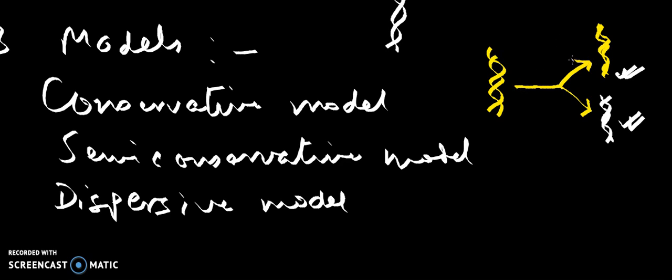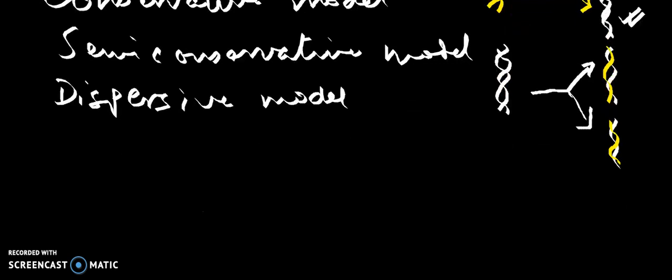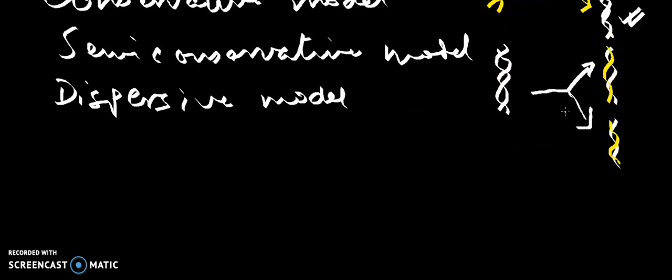The semi-conservative model says that one of the strands of the daughter DNA molecule is parental DNA and the other DNA is the newer one. So it is half conserved. That's why it is called semi-conservative model. And this model is probably found everywhere in the cellular system and it is true. It was proposed by Watson and Crick.